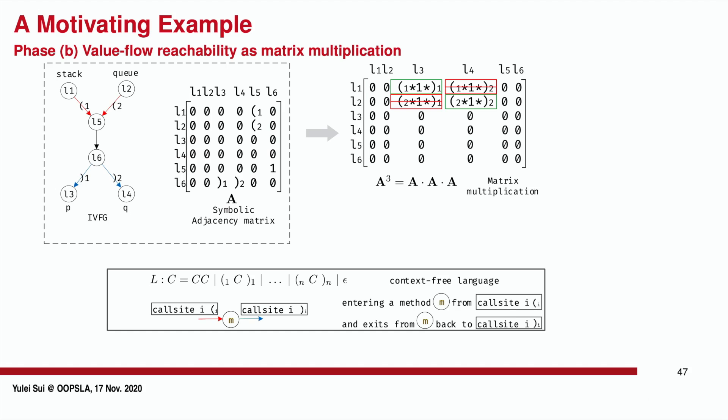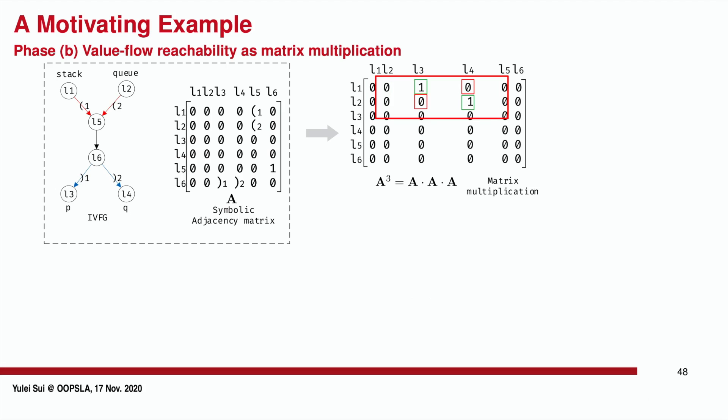The feasibility of a path is determined by context-free language defined here. By applying CFL reachability analysis, we can filter out unrealizable interprocedural paths by matching calls and returns. The resolved, realizable, and unrealizable symbolic paths are set to 1 and 0 respectively to produce the final binary matrix.